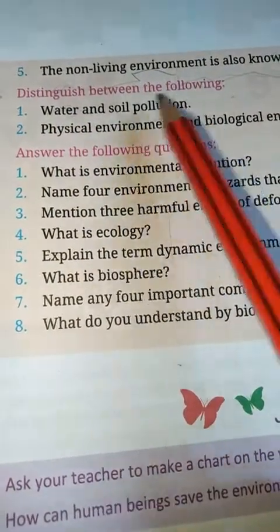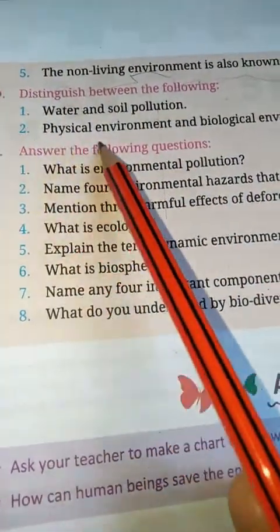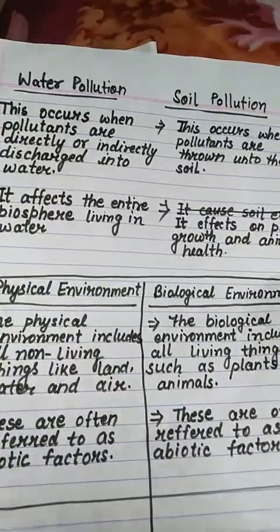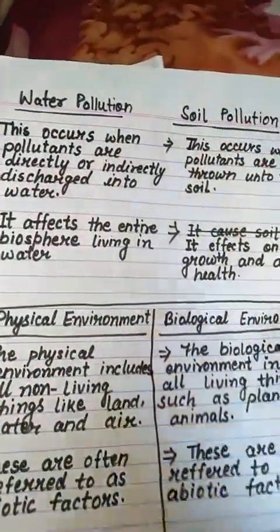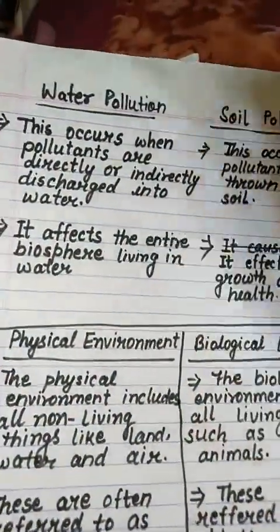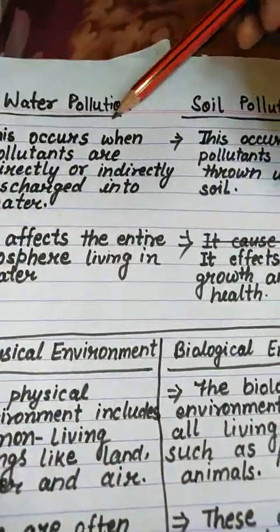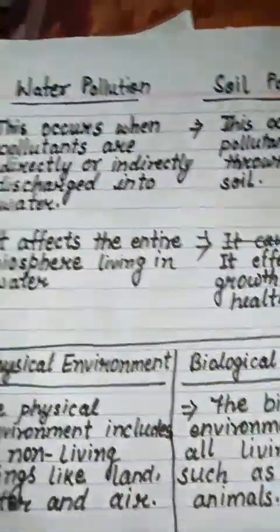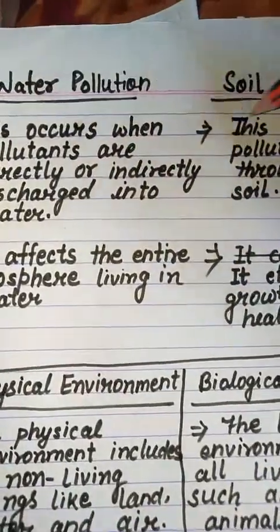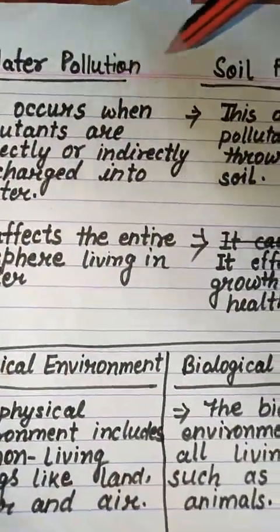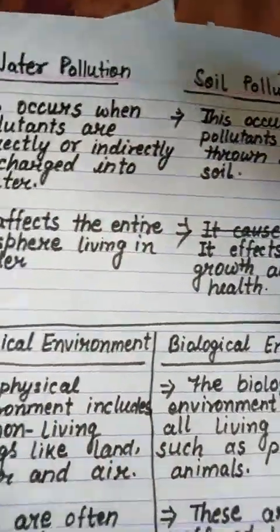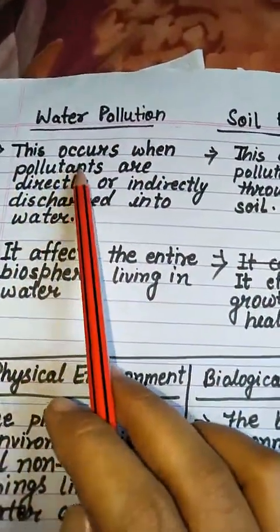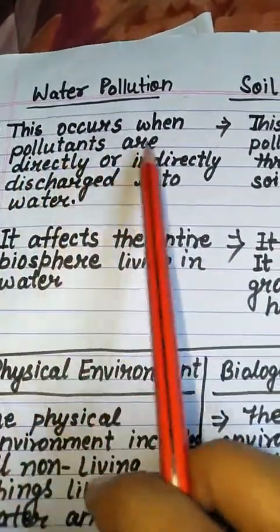Next, distinguish between the following. You have to write the difference between: number one, water and soil pollution, and number two, physical environment and biological environment. Let's start with water pollution and soil pollution.